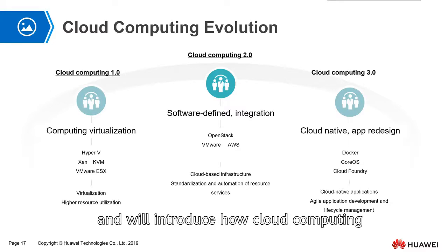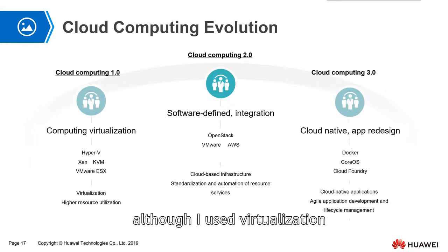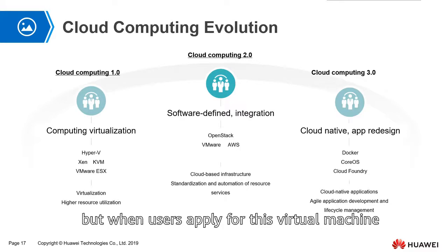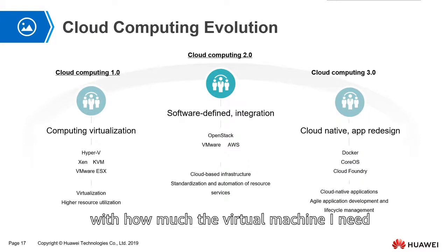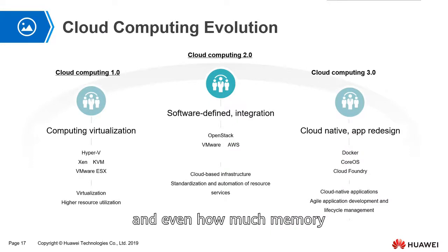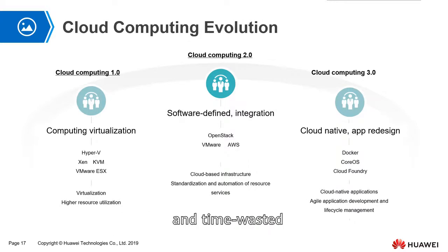In the 1.0 era, everyone found that although using virtualization can improve hardware utilization, when users apply for a virtual machine, they still need to go through the traditional approval process. They need to provide the administrator with how many virtual machines they need, how much memory, how large the hard disk, and then the administrator manually creates the virtual machine. If a company is big enough, their administrators become very inefficient and time is wasted.